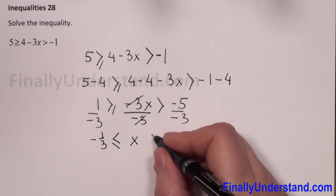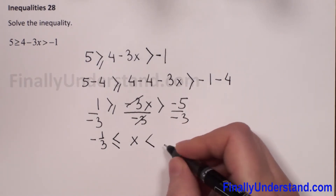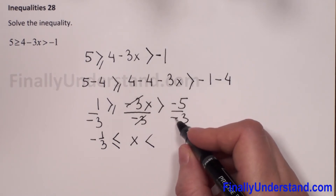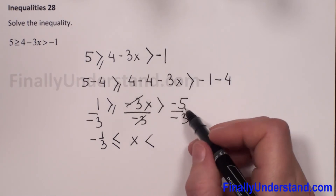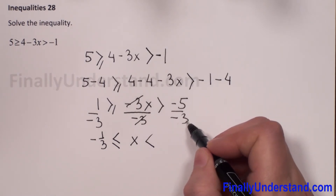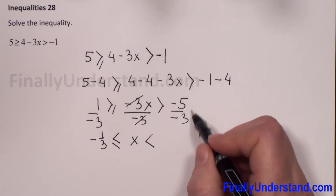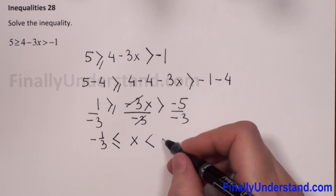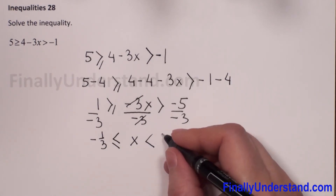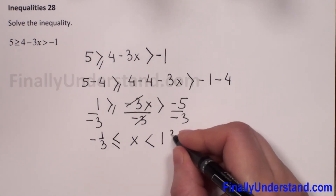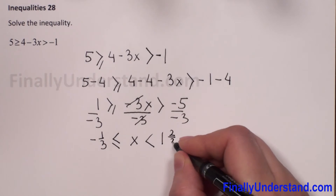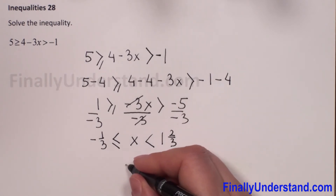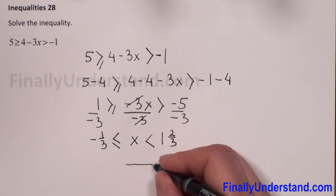The sign changes to less than, and negative divided by negative cancels, giving 5 over 3. Since 5 over 3 is an improper fraction, I have to change it to a mixed number — it will be 1 and 2 thirds. Now we have to draw the number line.